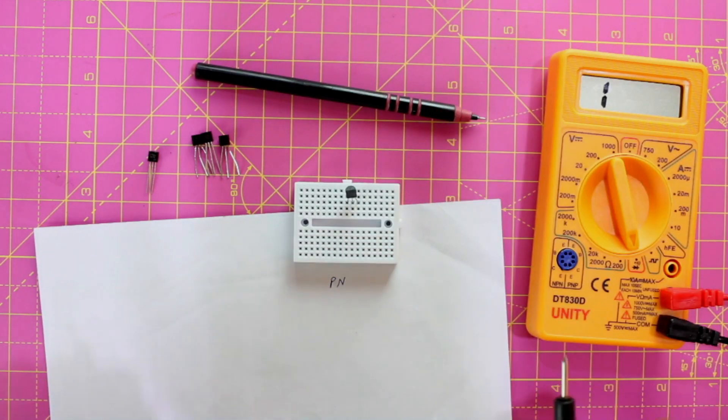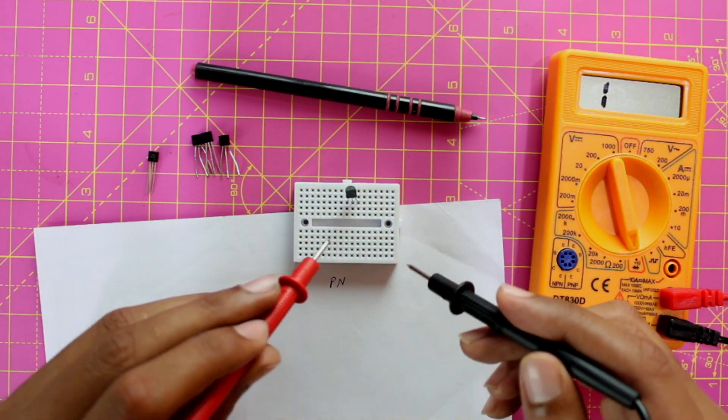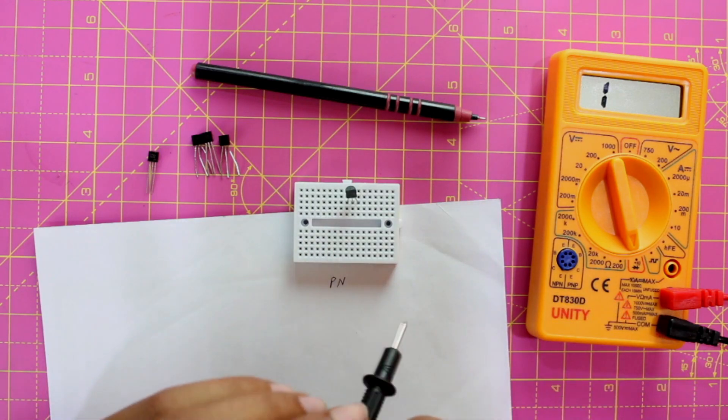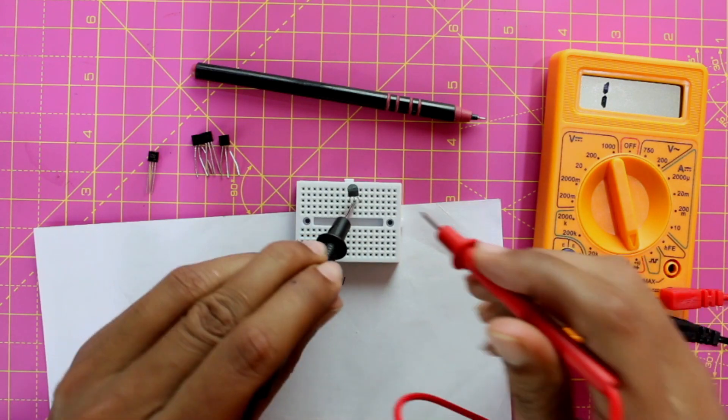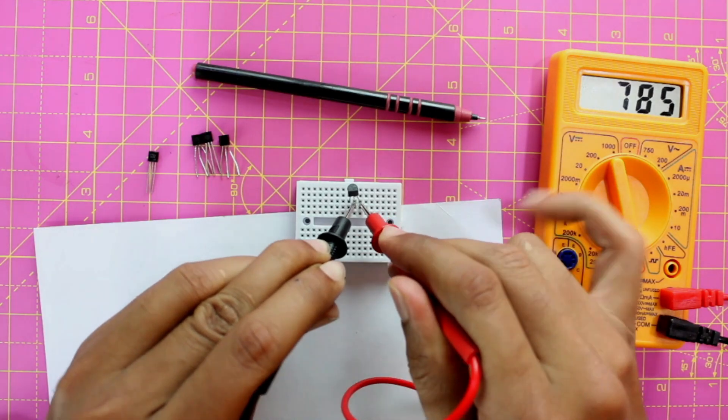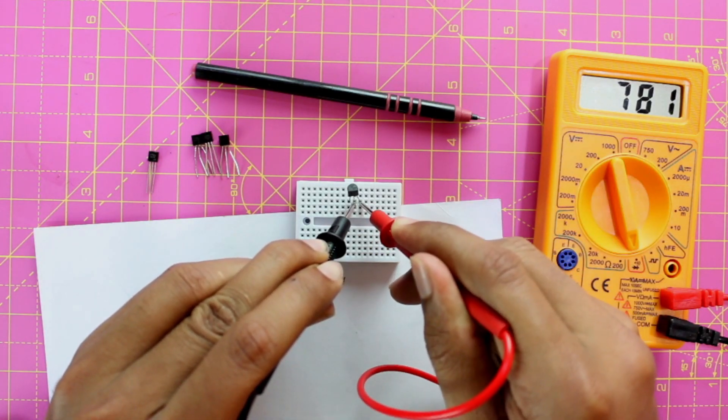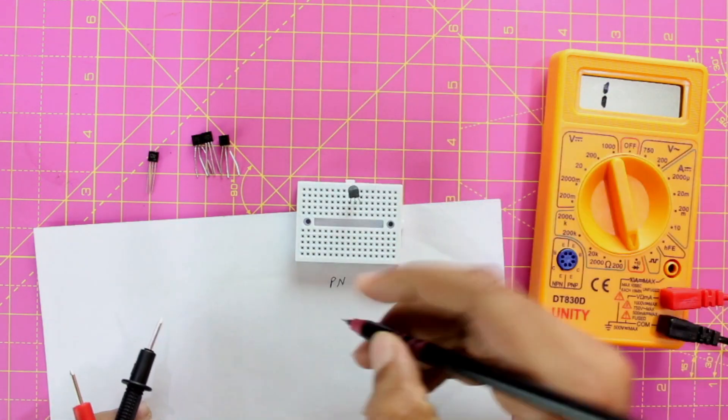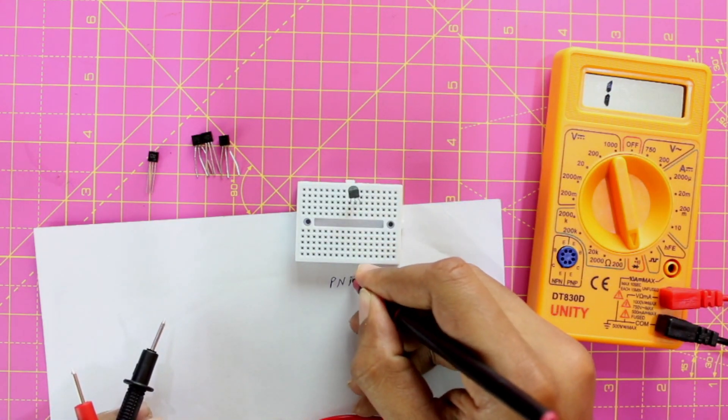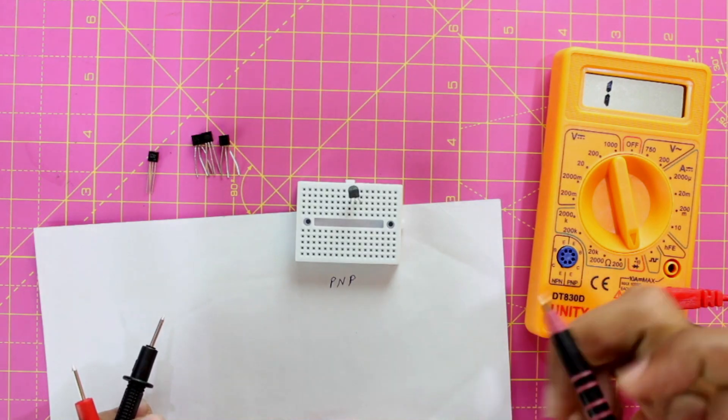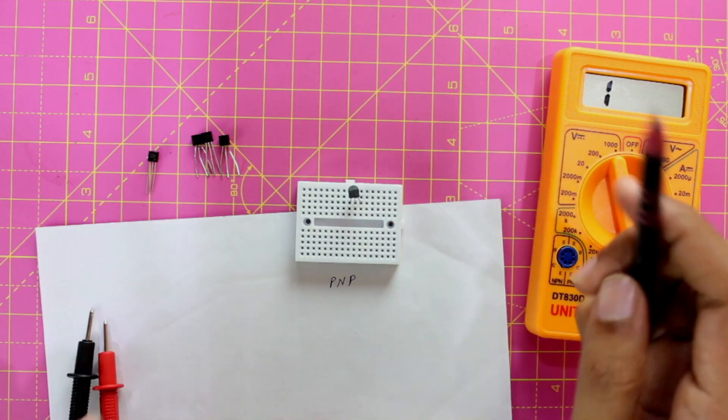Now I have to check if the third pin is a P or N. So I know that my center pin is negative. I am going to put my N here and P here. Again I am getting a voltage drop. So now I know that my third pin is also a P. So just like that we have found out if this transistor is an NPN transistor or a PNP transistor. So this one is a PNP transistor.